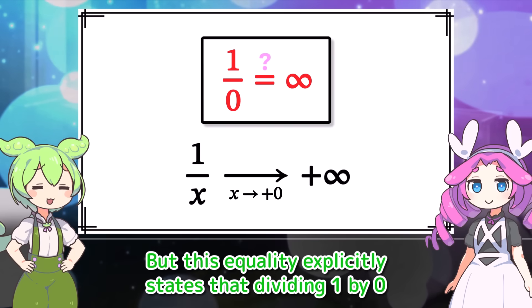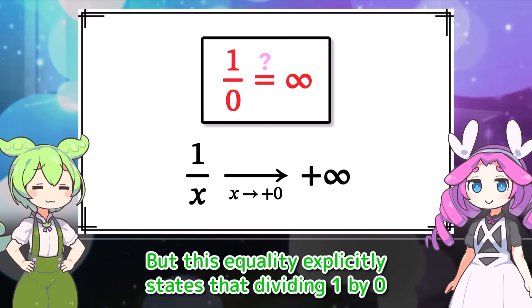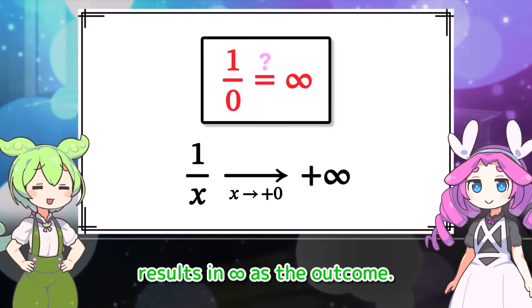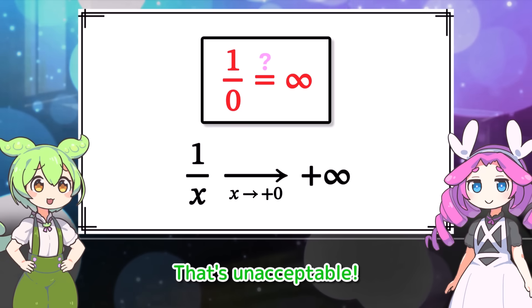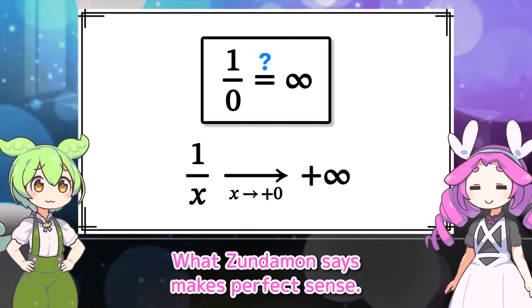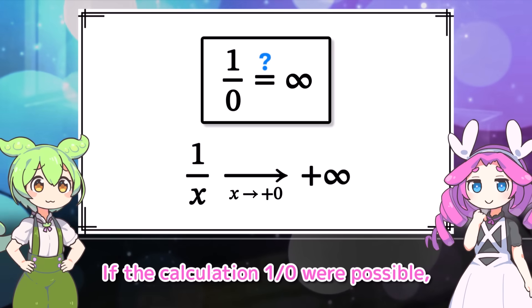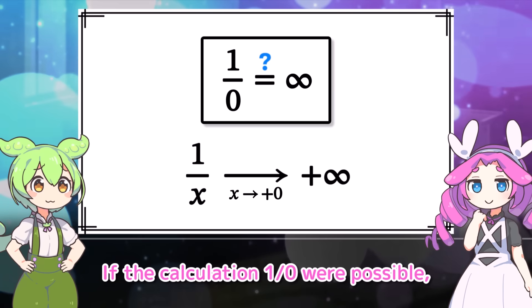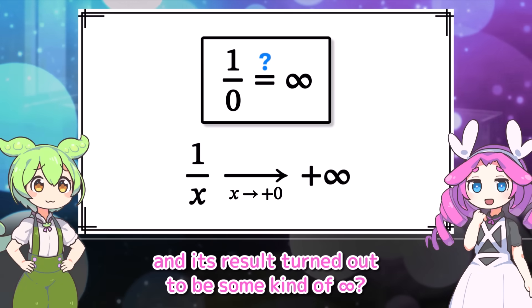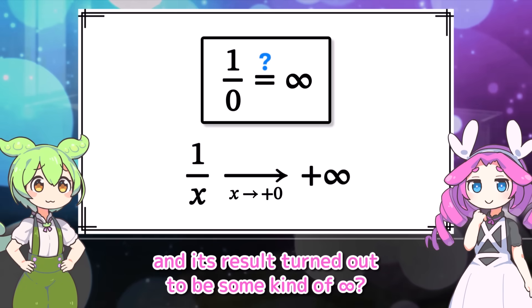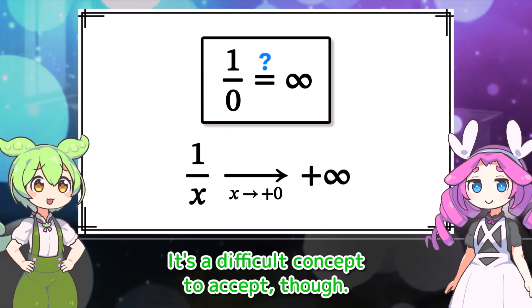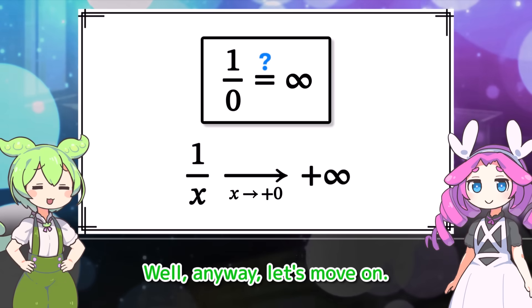We simply write positive infinity because it's convenient. But this equality explicitly states that dividing 1 by 0 results in infinity as the outcome — that's unacceptable. What Zunderman says makes perfect sense. But if the calculation 1 over 0 were possible, and its result turned out to be some kind of infinity... it's a difficult concept to accept. Anyway, let's move on.